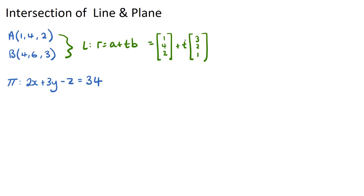And we want to know when does this line intersect with our plane here: 2x plus 3y minus z equals 34.